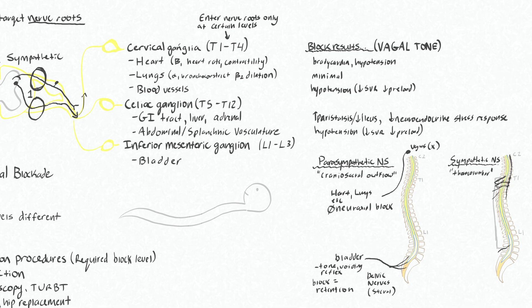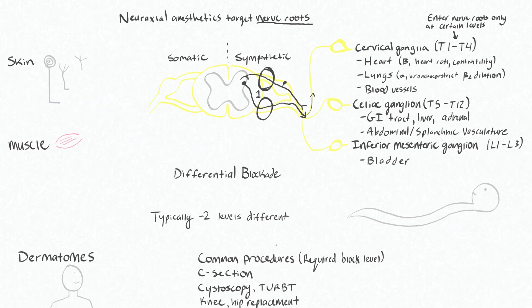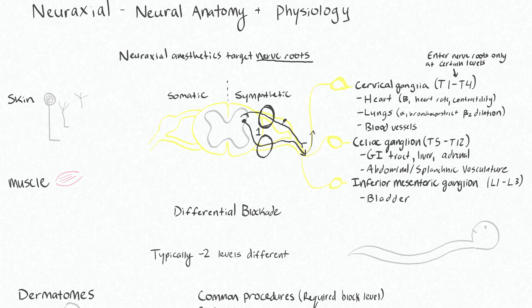For example, your superior cervical ganglia actually resides way up near your cervical vertebrae, but the nerve fibers travel down and then enter the spinal cord through T1 to T4. That about covers the blockade of the sympathetic nervous system. I should just add that these sympathetic afferents are C fibers, and these afferents are B fibers.